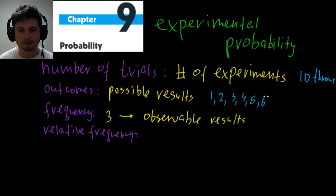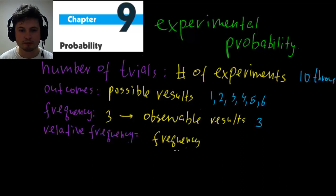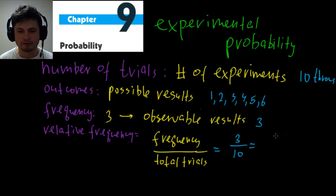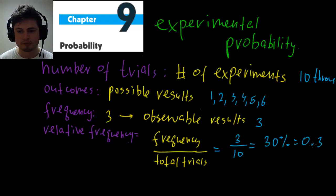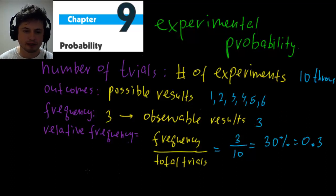So frequency is the observable result count — let's say it's three. Relative frequency is the frequency divided by the total number of trials: three divided by ten equals 0.3, or 30% chance of getting a five. This is slightly higher than you'd expect from a die, but it could just be chance. Relative frequency is what we'll usually be looking for, and it's also known as experimental probability.